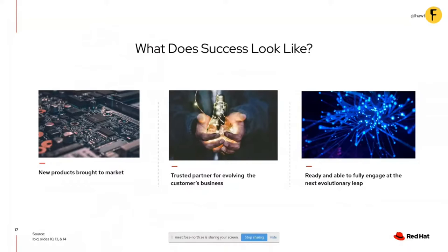Success could also look like having enough information about a particular technology area so that when the market evolves — for example, moving from Docker to Kubernetes — you are ready to engage fully and change your strategy in an agile fashion to meet the needs of the market, while still serving the needs of customers who have not yet begun to think about that evolutionary transition, so that you can bring them along with you as that change is made.